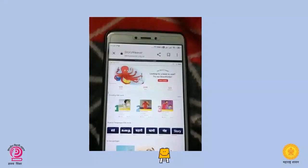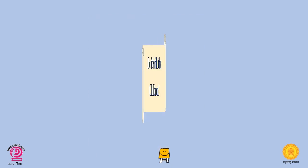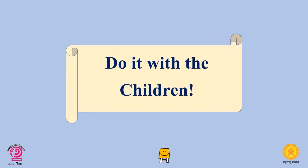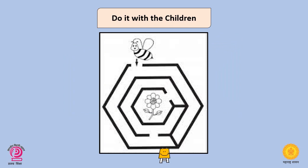Hope you have benefited from this video. Now let's move on to the next activity called 'Do It With Children.' Take a sheet of paper and draw the picture shown in the worksheet. Then help the child trace the path of the bee to reach the flower with a pencil.